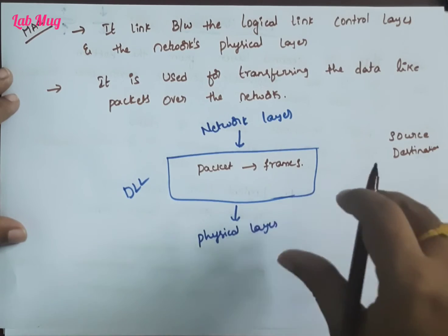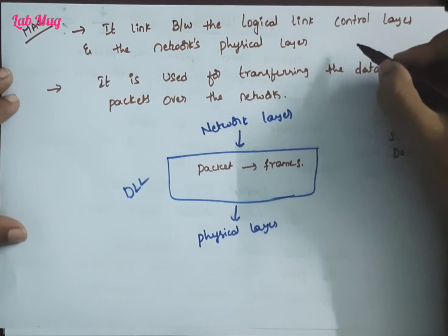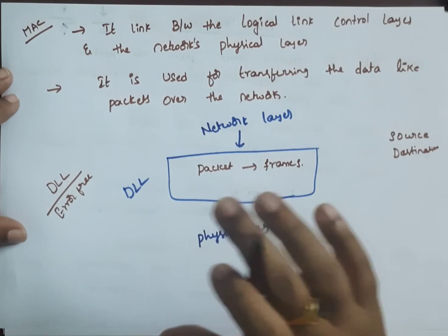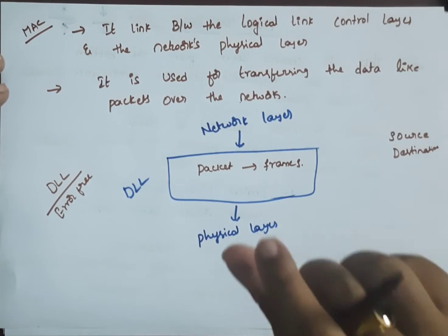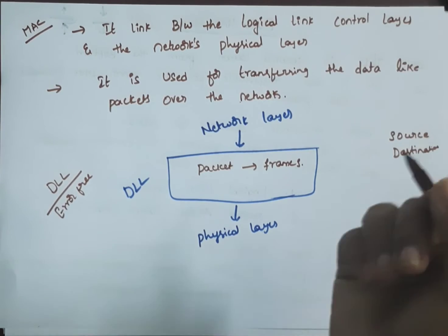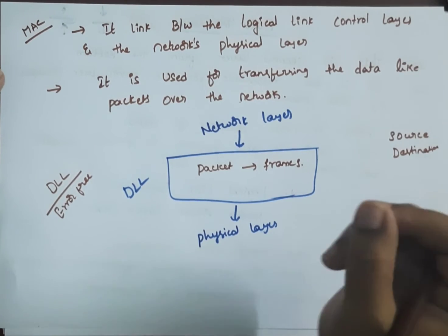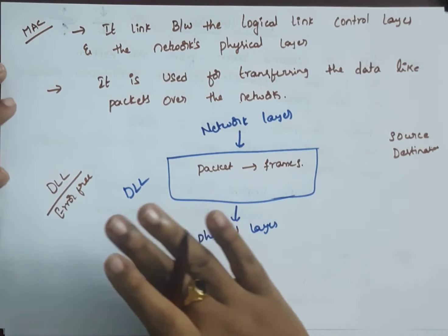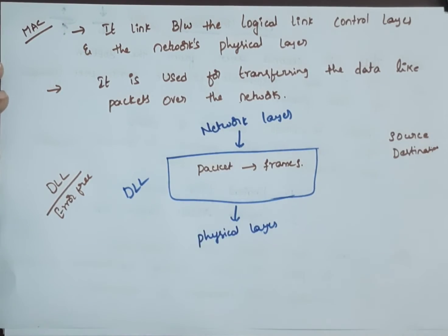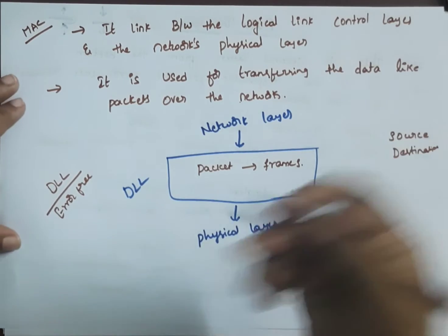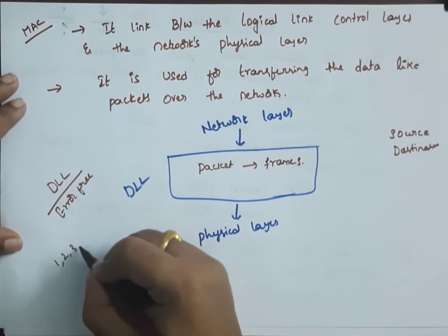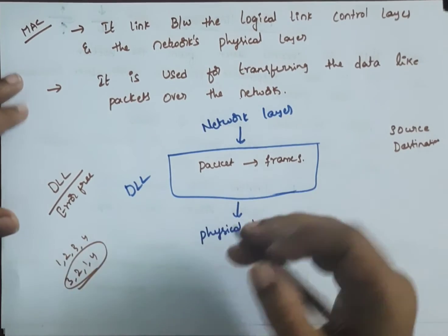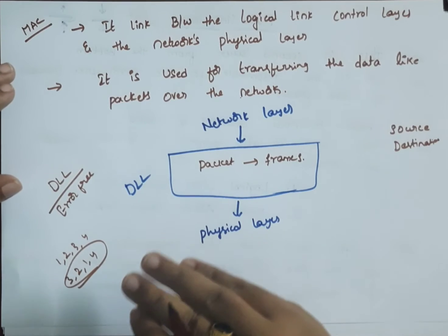After the physical address, the main thing is error-free and efficient data. The error-free nature of data is called error control. When we divide these frames, there will not be noise, disturbance, or any wrong things — there will be no error. We control each and every piece of data and maintain the flow. For example, if we send 1, 2, 3, 4, the flow should not arrive out of order as 3, 2, 1, 4 — that disturbance is what flow control prevents.